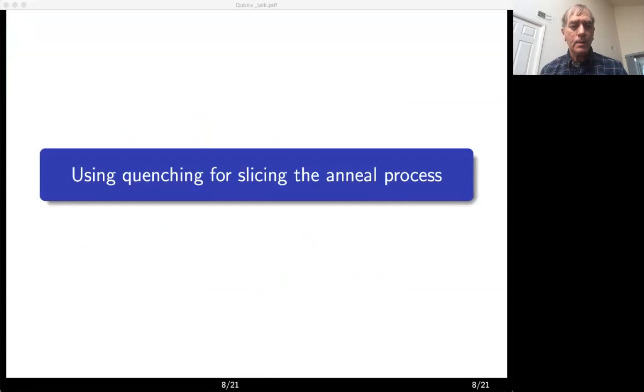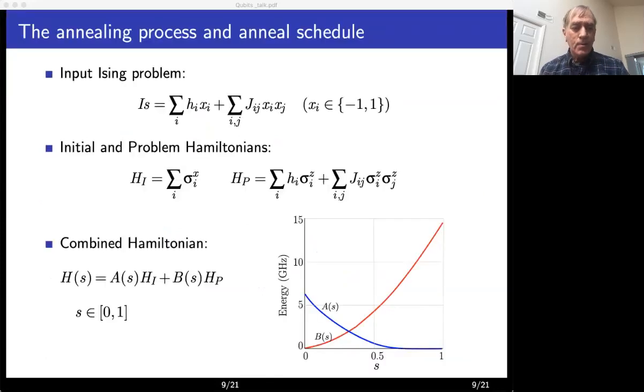So next we go to discuss the quenching and how useful it is to get information about the annealing process. First, let us quickly review how one uses schedules to control the annealing process. Given an input Ising, the Hamiltonian specifying the quantum evolution is a linear combination of an initial Hamiltonian and the problem one, and that linear combination is weighted by functions A(s) and B(s) of a variable s between zero and one called anneal fraction.